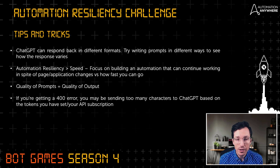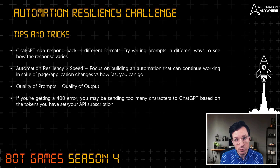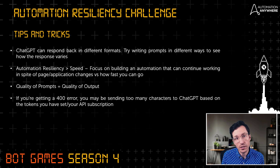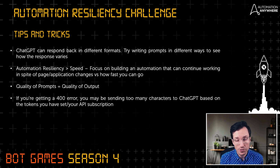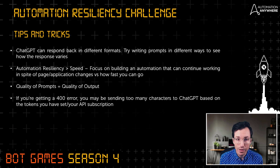If you're getting a 400 error, you may be sending too many characters to ChatGPT based on the tokens set in your API subscription configuration. Think about how you can trim down the number of characters you're sending — not only does that help with efficiency of the API, it can also make your requests and responses a bit faster. If you are getting a 400 error, trimming down characters will likely take care of that issue.